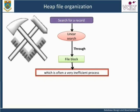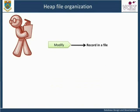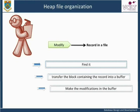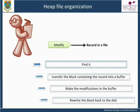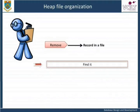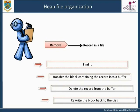If only one record satisfies the search condition, on average half of the file blocks will have to be transferred into main memory before the desired record is found. If no records or several records satisfy the condition, all blocks will have to be transferred. To modify a record in a file, a program must find it, transfer the block containing the record into a buffer, make the modifications in the buffer, and rewrite the block back to disk. To remove a record from a file, a program must find it, transfer the block into a buffer, delete the record from the buffer, and rewrite the block back to disk. The process of finding the record can be time consuming in both cases.